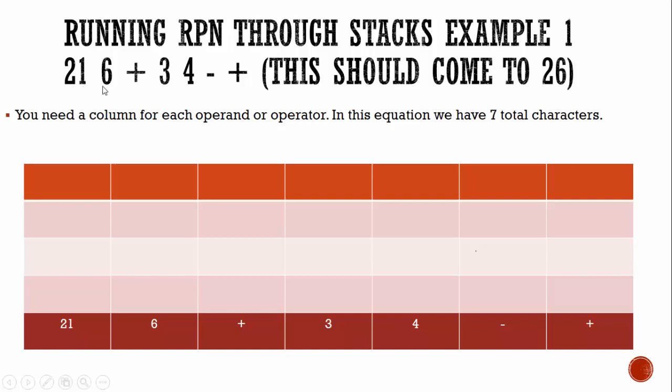In this equation, we have seven total characters. We have 21, 6 plus 3, 4 minus plus. 1, 2, 3, 4, 5, 6, 7. 21, we're counting as one character.